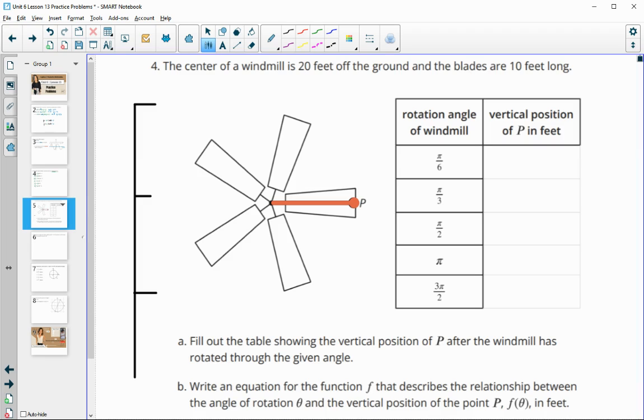Number four, the center of a windmill is 20 feet off the ground, and the blades are 10 feet long. Fill out the table representing the vertical position of the windmill after it's been rotated through each of these given angles, and then we're going to write an equation for the function of it. So the center is 20 feet off the ground. This middle of your graph right here is at 20. The blades are 10 feet long. So when the blade goes directly to the top, this distance is 10 units from the center. That means the top of this windmill is at 30 feet, and the bottom is at 10 feet off the ground.